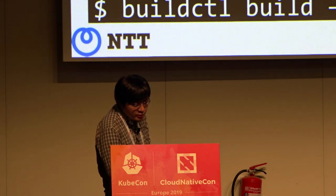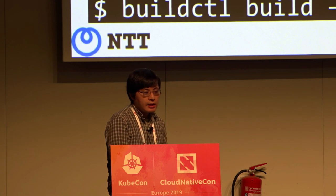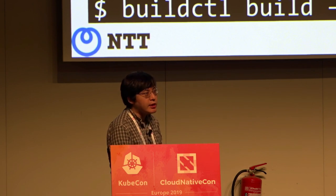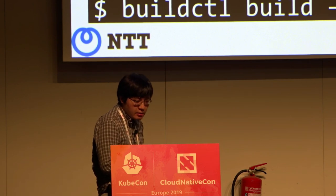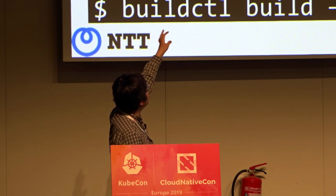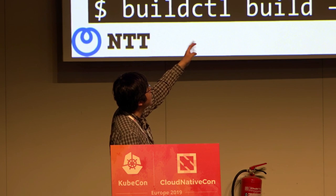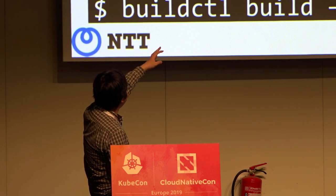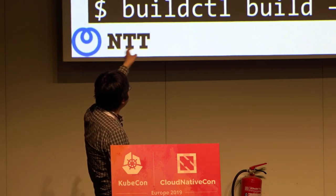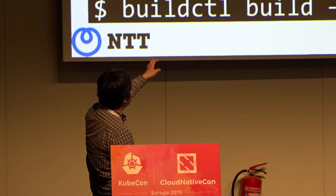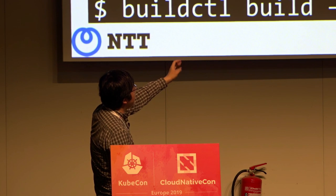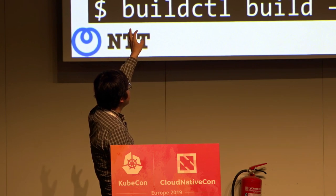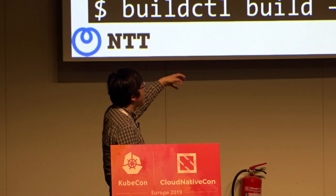BuildKit also has RUN --mount=type=ssh. This is similar to mount type secret, but it's specific to SSH and it can also support passphrases. In the Dockerfile, you specify run --mount=ssh and run a git clone command for your private git repo. On the client side, you run ssh-agent, add your private key, enter your password, and you can run buildctl build --ssh default=$SSH_AUTH_SOCK, so your git command can access your credential with the mounted socket.